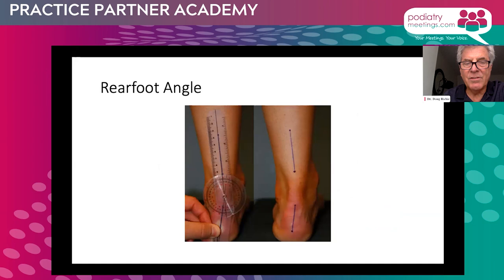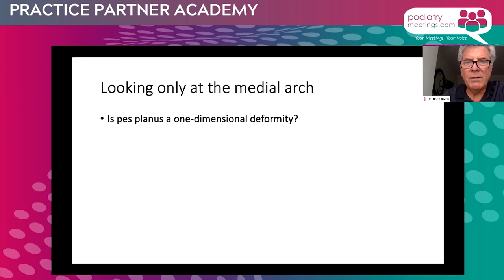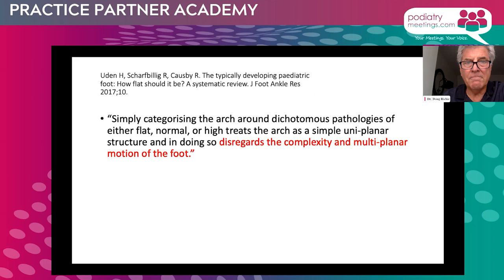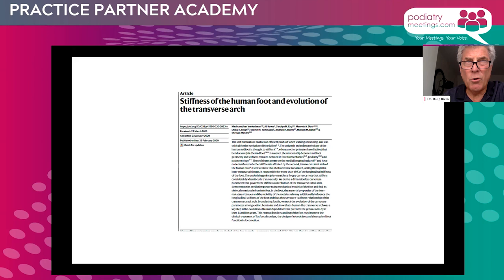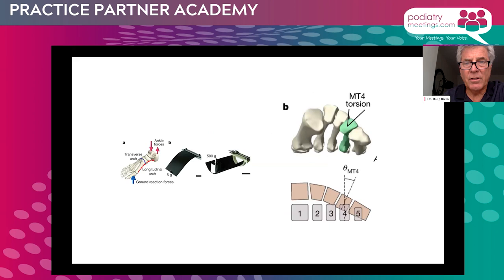Early studies used simple footprint-based measures such as the arch index, looking at the progression of arch development in a growing child. Later, measurements like the rear foot angle documented improvements in alignment from birth up until age nine. But these are almost one-dimensional measurements — frontal plane, sagittal plane, or transverse plane — that disregard the complexity of multi-planar motion. We're getting more insight into multiple arch structures of the foot, specifically the transverse tarsal arch, which is accumulating evidence showing it imparts more stiffness to the human foot during gait than either the medial or lateral longitudinal arch. The lateral longitudinal arch is also a very important structure during gait as it transfers load from lateral to medial and initiates an efficient push-off.